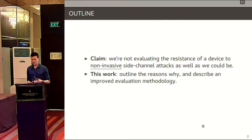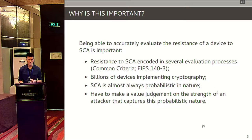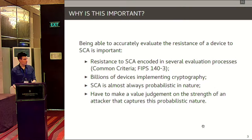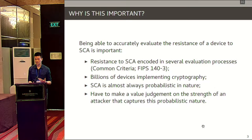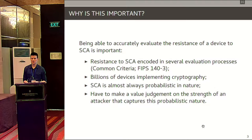Hopefully I want to convince you why that is and what we can do about it. Resistance to these attacks is encoded in several evaluation processes already — for instance, FIPS 140-3 or Common Criteria 3.1. There are billions of devices that should be following these security guidelines. An accurate evaluation is especially important because SCA is almost always probabilistic in nature — sometimes the attacker gets lucky — and evaluators need to say with some confidence how lucky that attacker can be.